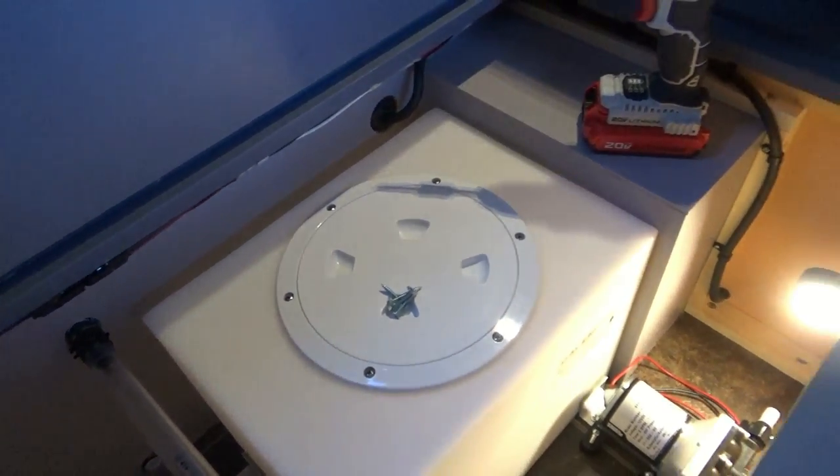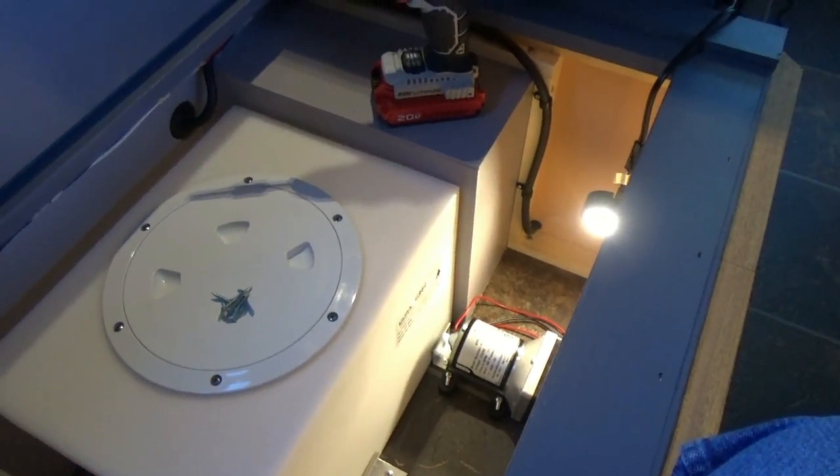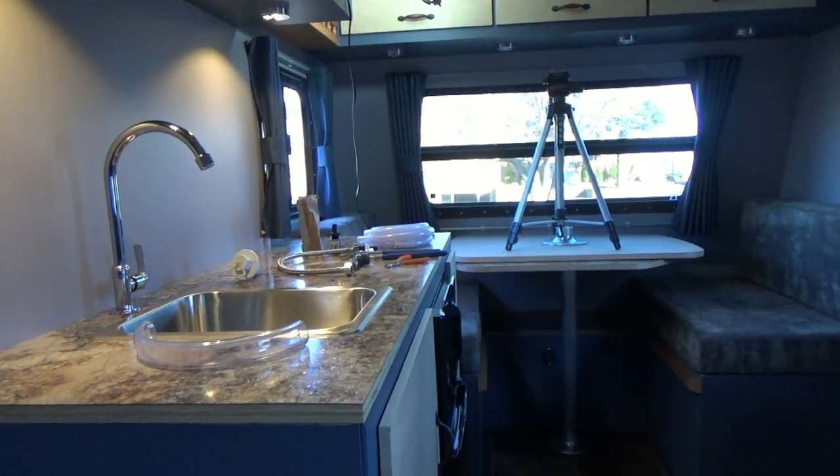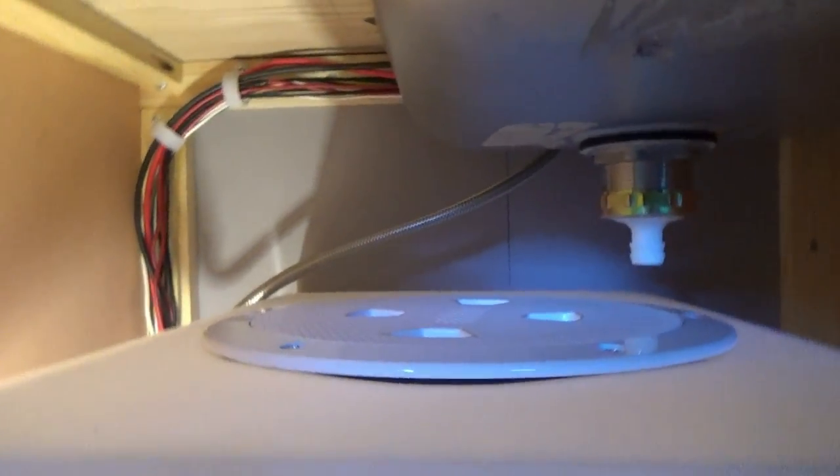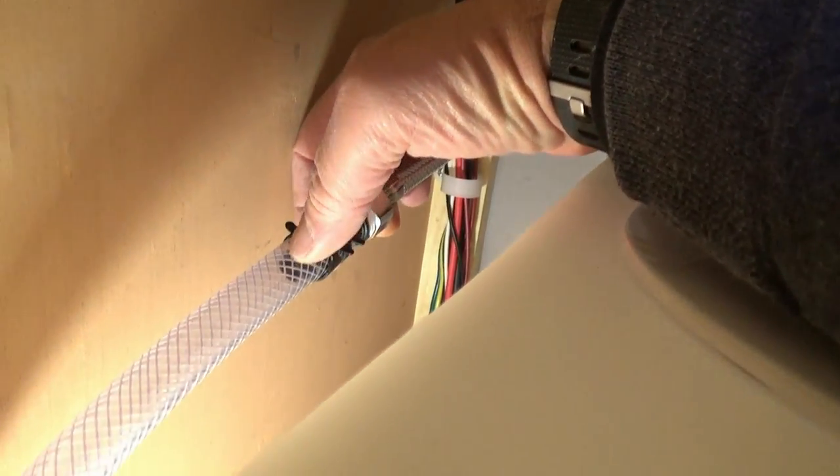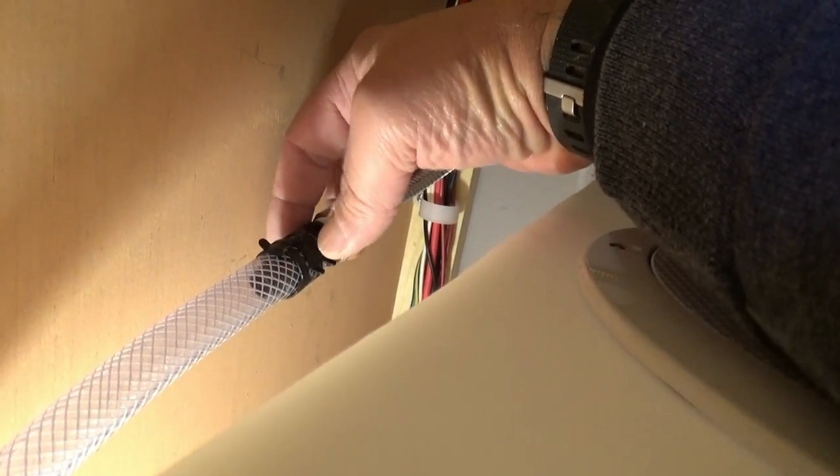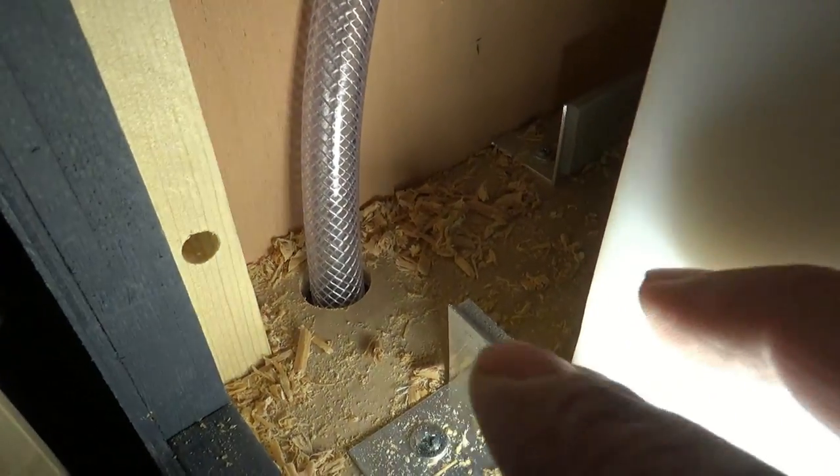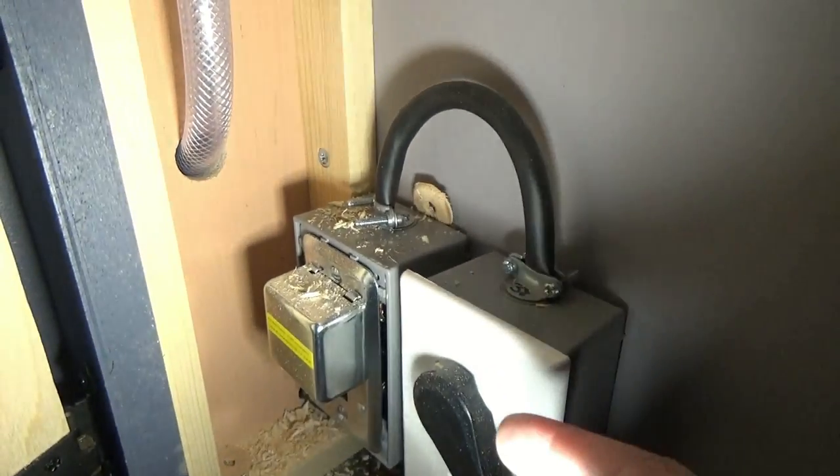So without any further ado, let's get started. All right, so we've got our line connected to our faucet, installed our fitting here and attached our nylon tubing, put a couple of clamps. We've got a hole drilled through the floor of the cabinet and coming down to the bottom here into our area for our pump.